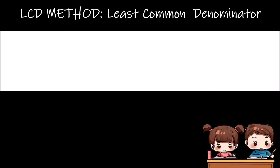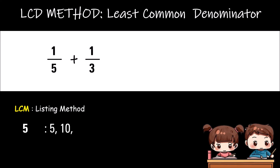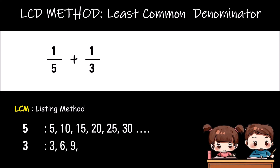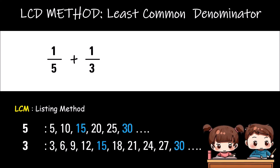The third method is the LCD method, also known as the least common denominator. For example, one-fifth plus one-third — list all the multiples of each denominator. Find the smallest or least multiple that is common to all denominators. To know more about LCM, you can watch my other video about it. Use the LCM to make like fractions.